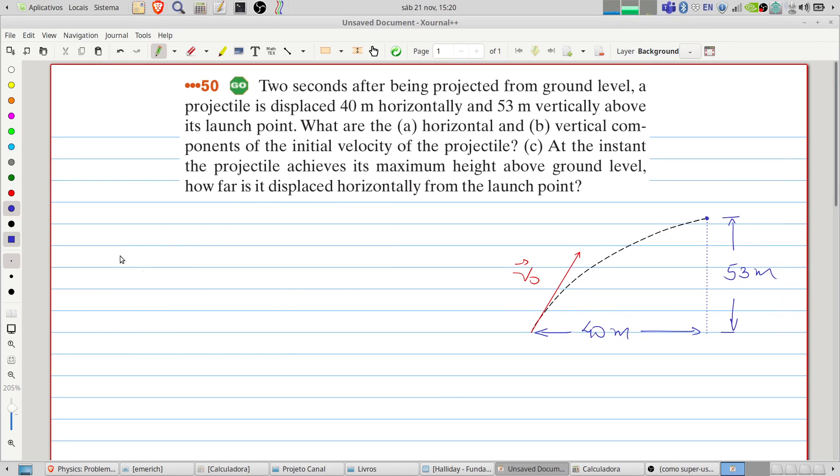We know that the movement in the x direction can be described simply as a movement without acceleration. The velocity will be constant, the velocity in the x direction. So the position will be described as the initial position, 0, plus the initial velocity in the x direction times t. We know that the displacement after 2 seconds will be 40 meters.